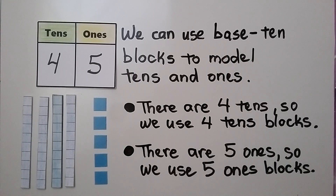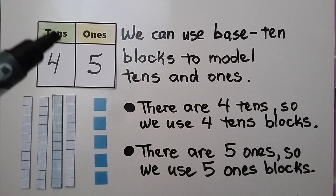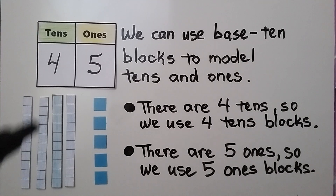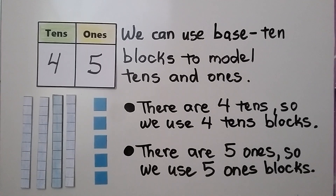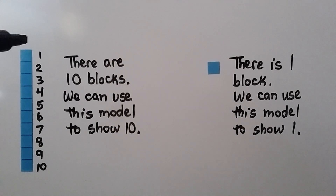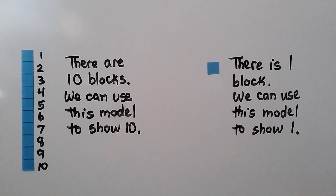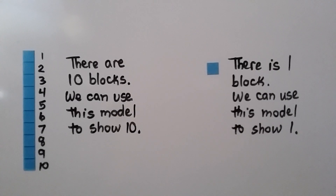We can use base ten blocks to model tens and ones. There are four tens, so we use four strips of ten. There are five ones, so we use five ones blocks. In a strip there are ten blocks, and we use this model to show ten. One single block is used to show one.